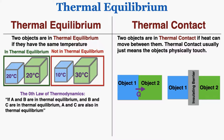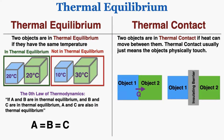There's a rule that scientists call the zeroth law of thermodynamics, which says if A and B are in thermal equilibrium, and B and C are in thermal equilibrium, then A and C are also in thermal equilibrium. That's an incredibly simple, intuitive law because all it's saying is that if A has the same temperature as B, and B has the same temperature as C, then A also has the same temperature as C.